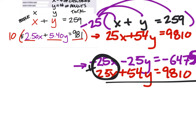Negative 25. We got these y's. Negative 25 plus 54. That would be 29. And this equals 9810. Negative 6475 plus 9810. 3335.